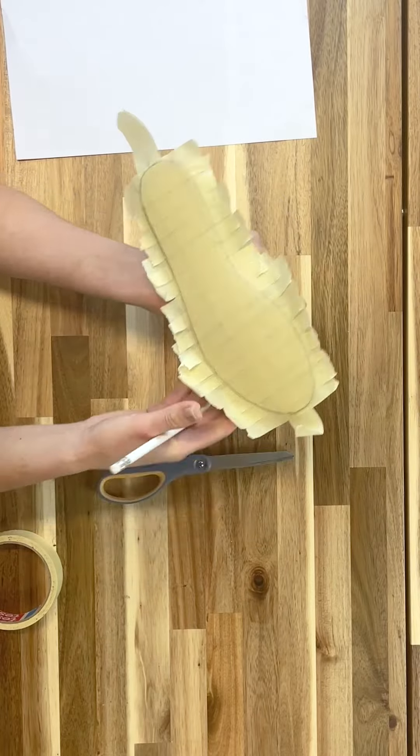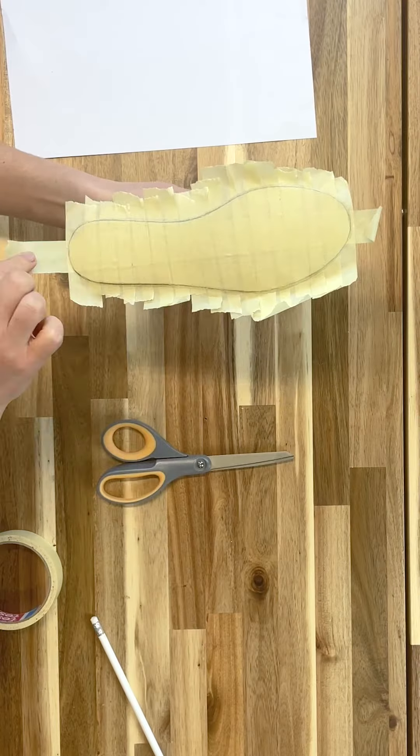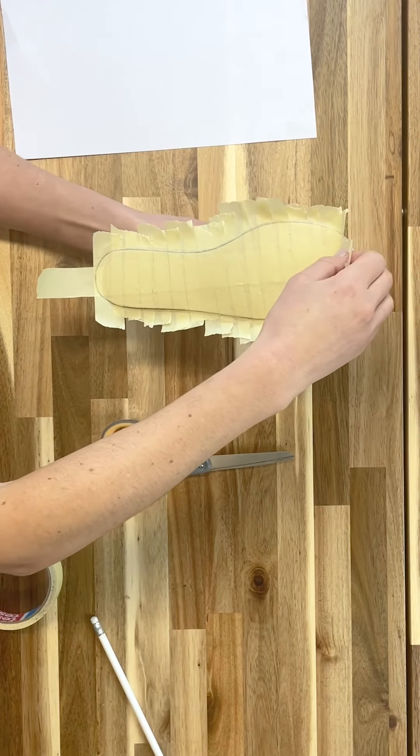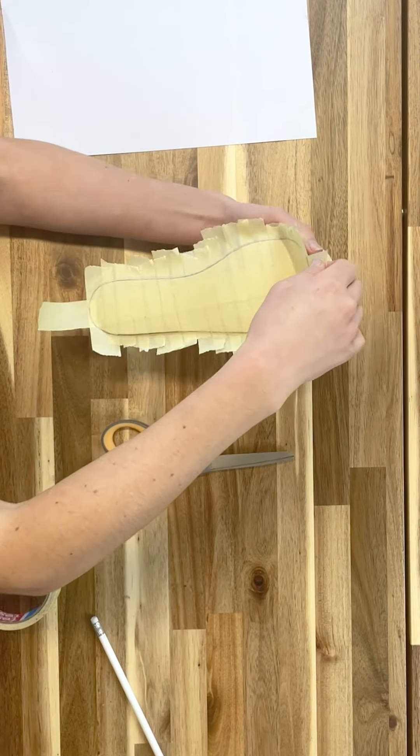Once you've marked around the feather edge, this is the satisfying bit. We are simply going to peel the long piece all the way down, removing it as one whole piece.